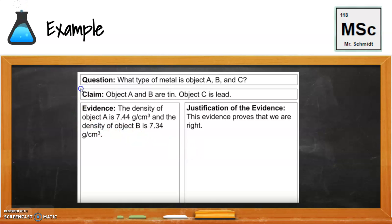Here's another example. It's kind of hard, confusing, because we're still talking about three different types of metals. But here's my question. What type of metal is object A, object B, and object C? Okay, that's all I'm giving you. So, the claim would be that object A and B are tin, and object C is lead. This is, again, what a scientist could do to figure out an unknown metal. The evidence that they're using is the density of object A is 7.44 grams per cubic centimeter, and the density of object B is 7.34 grams per cubic centimeter. And their justification of that is the evidence proves that we are right. Again, this doesn't give us much information. And, in fact, if this was something that you guys were to turn in, I would say that I'd probably hand it back to you and say we need some more information. Okay?